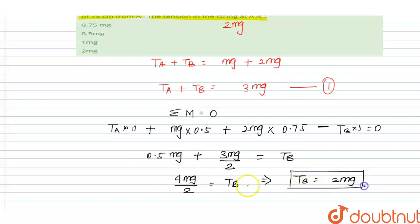Put the value of Tb equals 2Mg in this equation. We can write Ta plus 2Mg equals 3Mg. Then the value of Ta equals Mg.